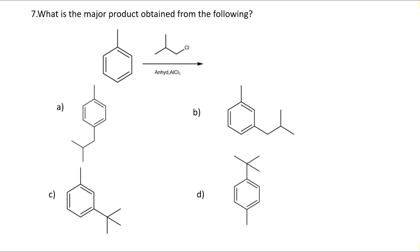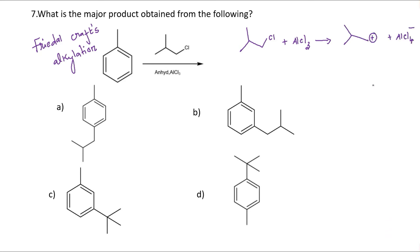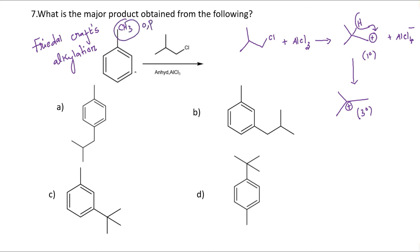Question number seven: what is the major product obtained when toluene is treated with isobutyl chloride in presence of anhydrous AlCl3? This is an example of Friedel-Crafts alkylation. In the first step, isobutyl chloride treated with AlCl3 forms a primary carbocation, which undergoes a hydride shift to gain stability, forming a tertiary carbocation. In toluene, the CH3 group is ortho-para directing; since the incoming electrophile is larger, ortho substitution is sterically hindered, so we get the para-substituted product as the major product. The correct answer is option D.